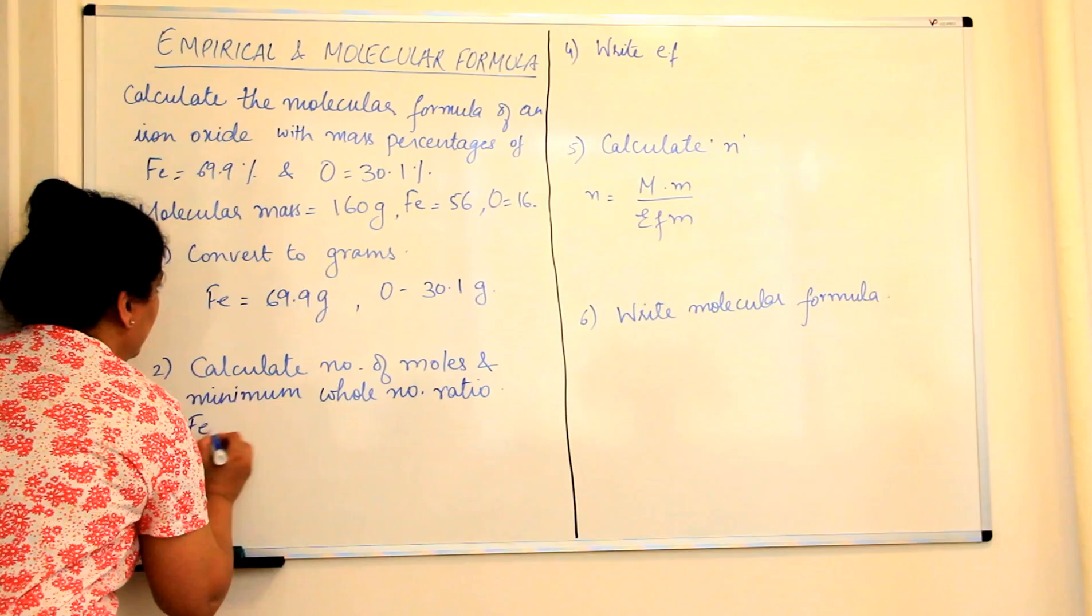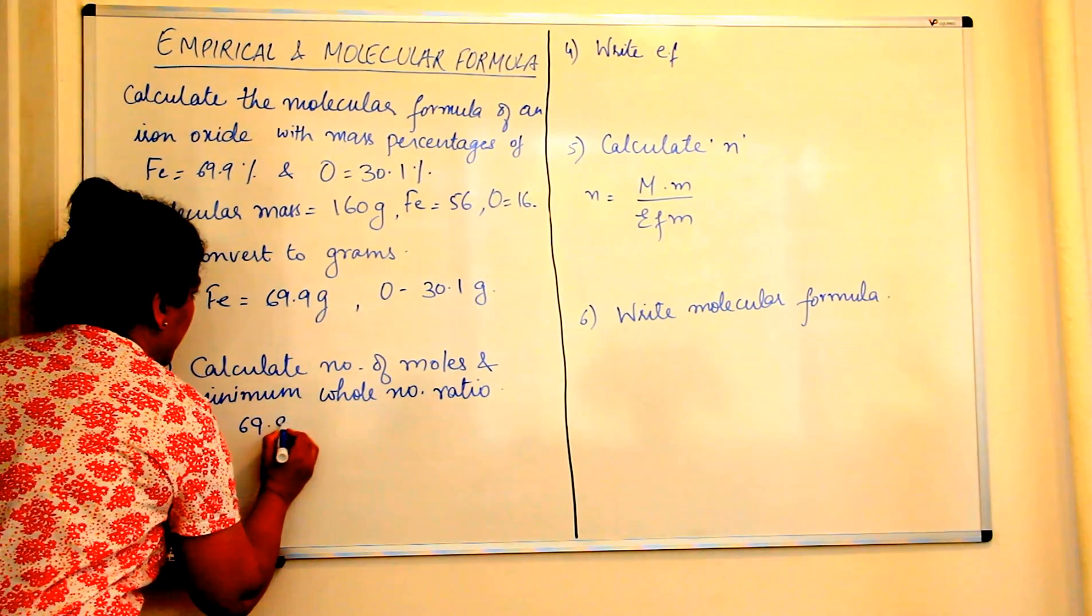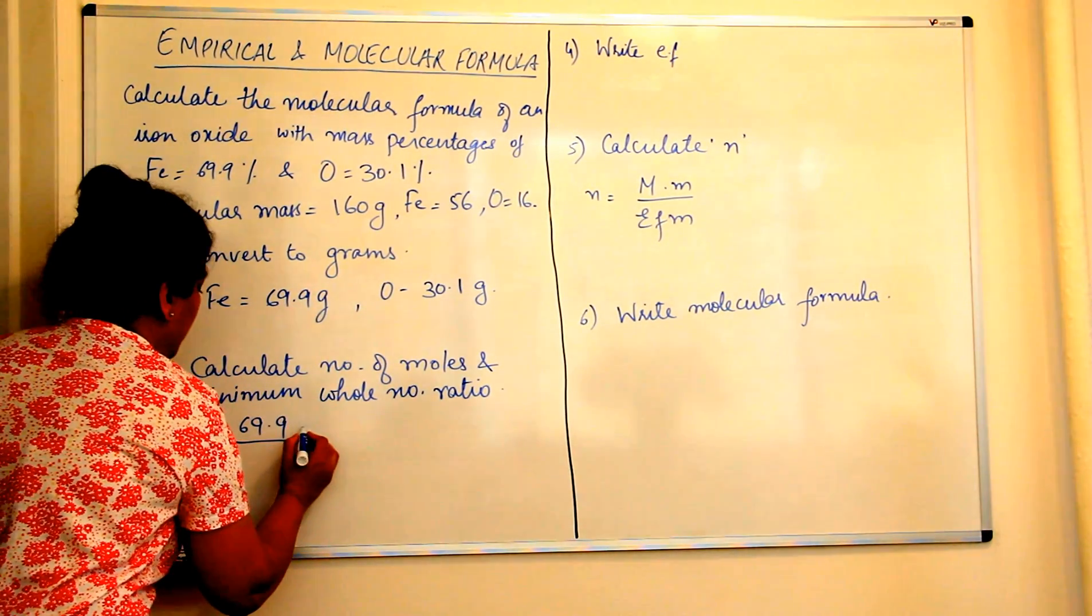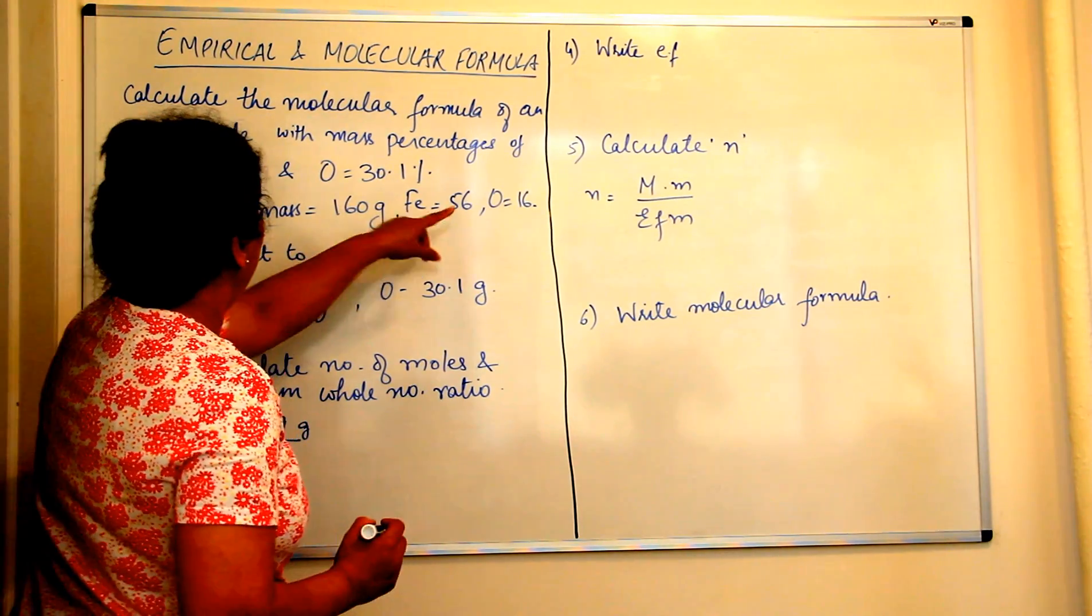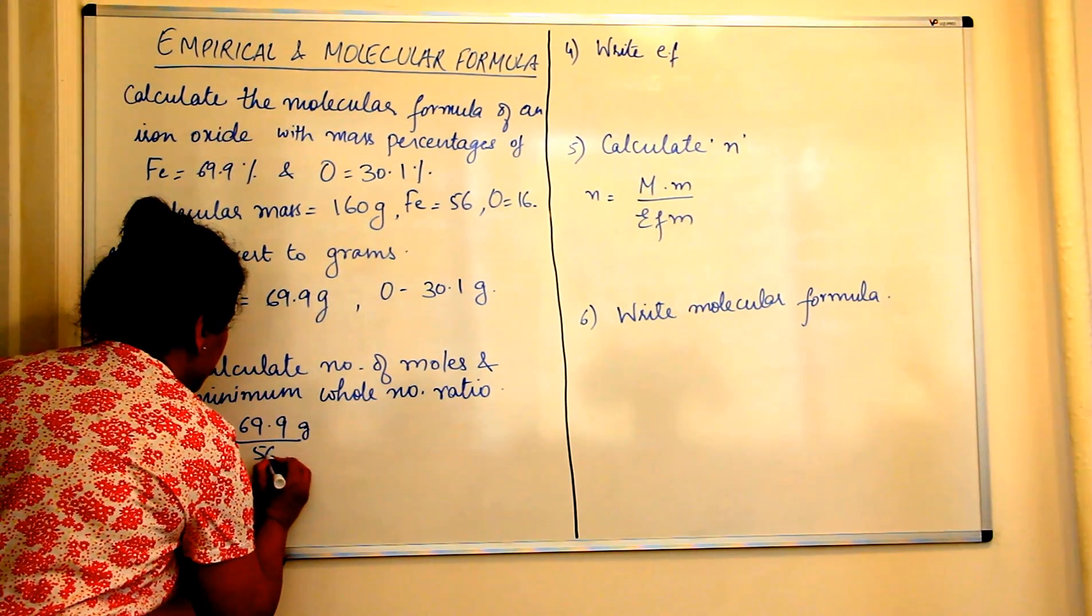So iron would be equal to 69.9 is the mass given in grams. And what is the atomic mass of iron? It's 56 grams.